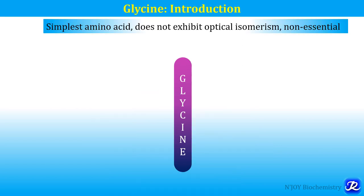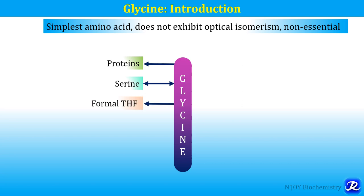Let's begin with the introduction of glycine. Glycine is the simplest amino acid and it is the only amino acid which does not exhibit optical isomerism. It is a non-essential amino acid, and glycine is synthesized from serine — this is a reversible reaction. Serine can be converted into glycine as well as glycine can be degraded to serine, depending upon the availability of tetrahydrofolate. So this is also involved in one carbon metabolism.